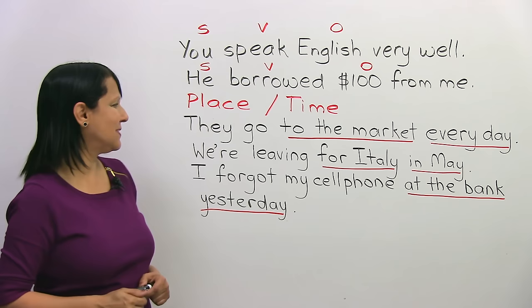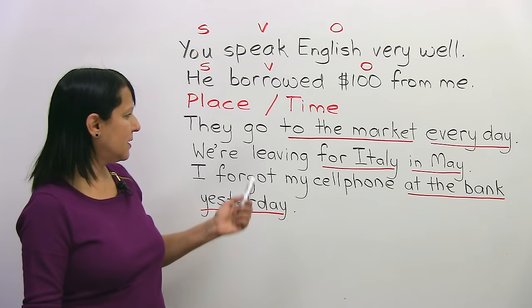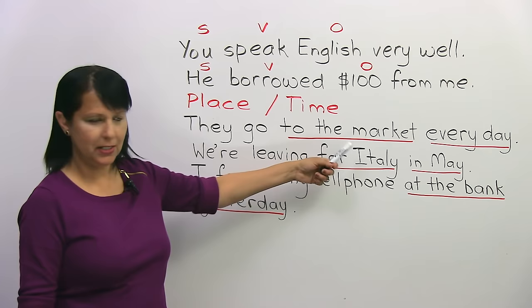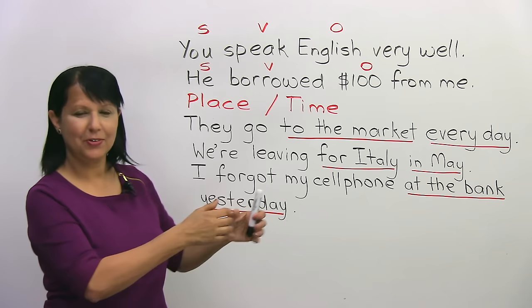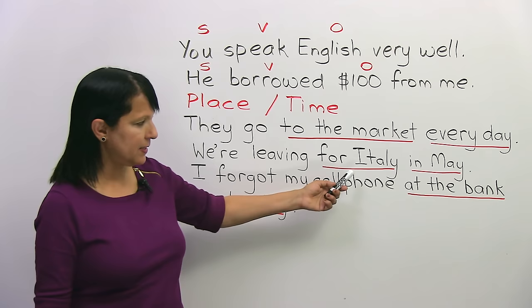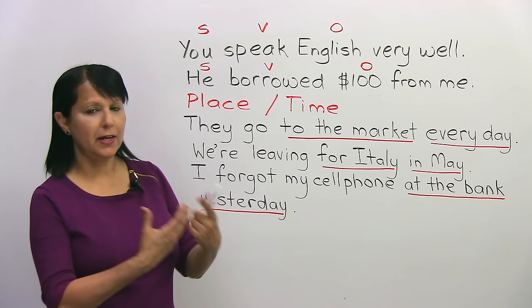Let's look at some examples. 'They go to the market every day.' Where? To the market. When? Every day. Not 'they go every day to the market.' Next: 'We're leaving for Italy in May.' Leaving for where? For Italy. When? In May. Where and when — place and time.